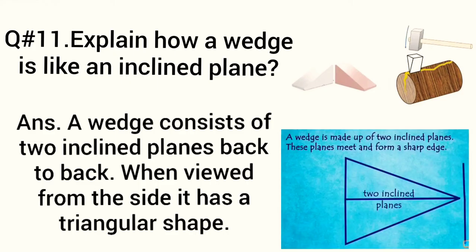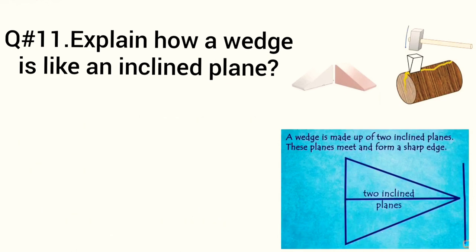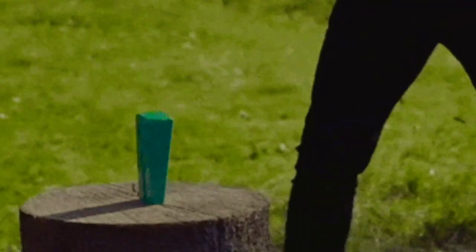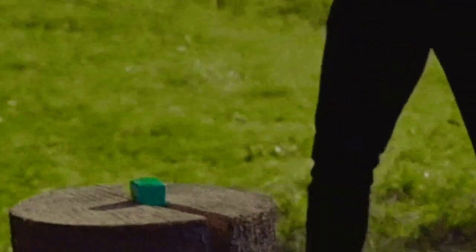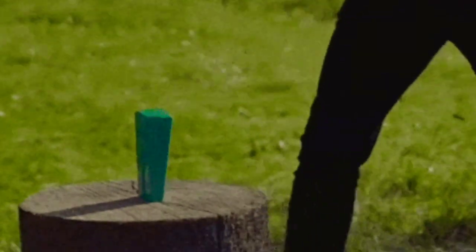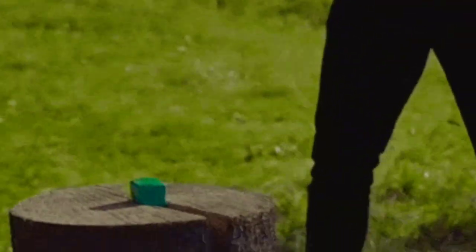Now question number 12: Explain how a wedge is like an inclined plane. A wedge consists of two inclined planes back to back. When viewed from the side, it has a triangular shape. A wedge is made up of two inclined planes. These planes meet and form a sharp edge. This sharp edge cuts many things easily. You might have seen, you might have used it, you might have seen a carpenter using these things. You might have seen people cutting the logs using this wedge.